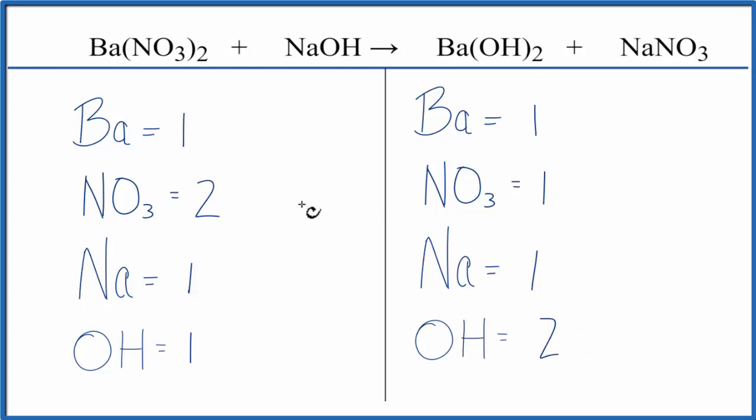Why don't we balance the nitrates first by putting a two in front of the sodium nitrate? So we have the one nitrate times the two. That gives us two of those. And then the one sodium times the two. That gives us two sodiums.